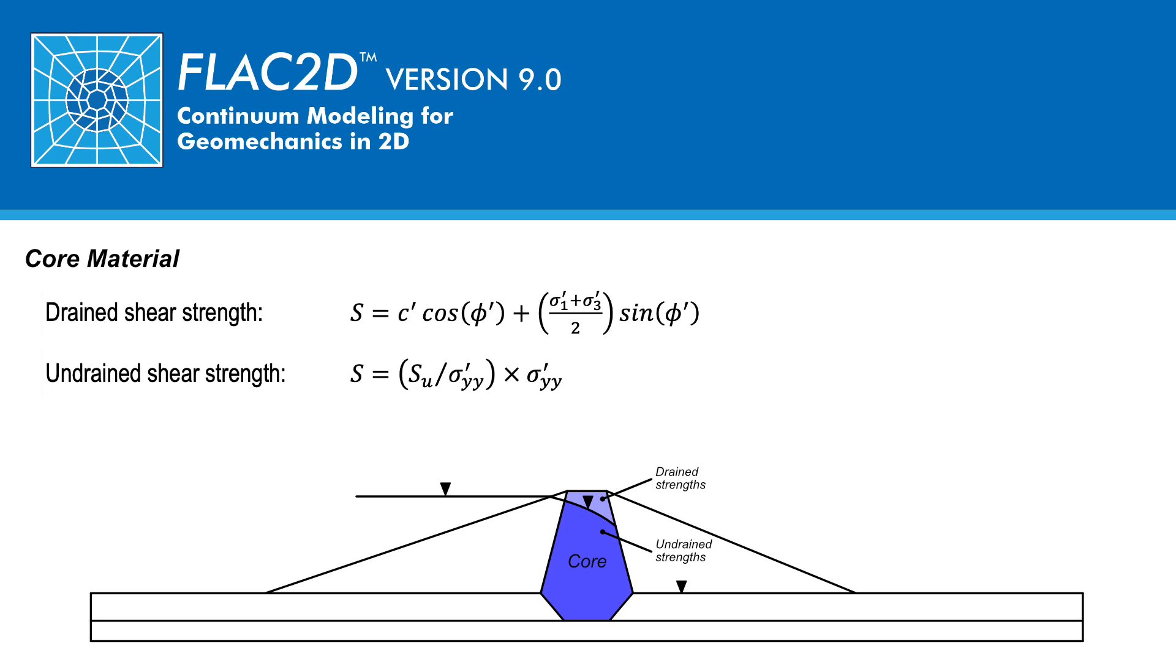The undrained shear strength of the core is S equals undrained strength divided by the vertical effective stress, all times the vertical effective stress. Note that this shear strength S will be equal to the cohesion parameter in the UBC-Hiss model and will be calculated zone by zone based on the pre-earthquake state of stress. Correspondingly, the friction angle parameter in the UBC-Hiss model is set to 0.